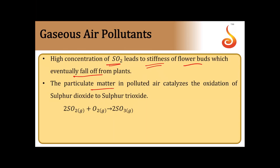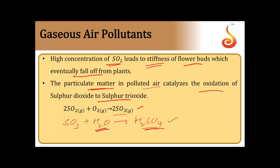Particulate matter in polluted air catalyzes the oxidation of SO2 to SO3. SO3, in the presence of moisture, forms H2SO4, which is acidic in nature. This sulfuric acid attacks marble, limestone, vegetation, paper, and textiles.